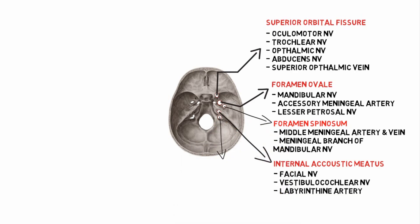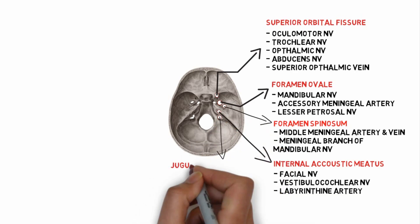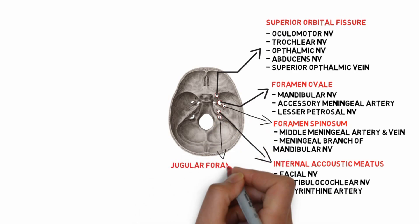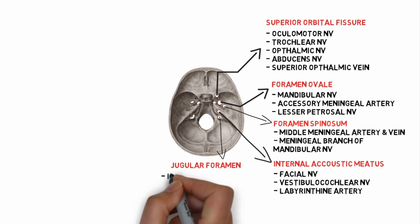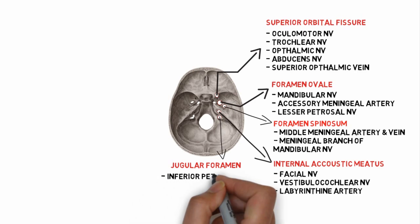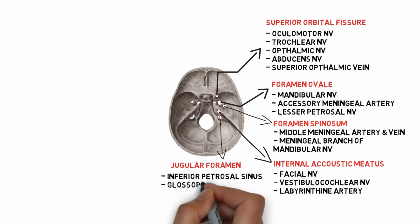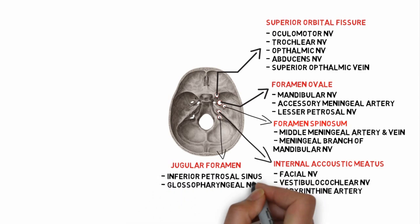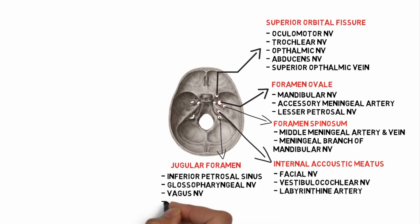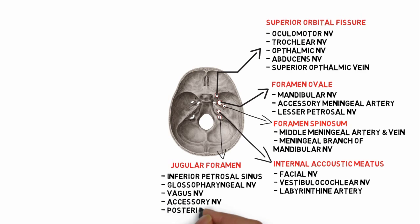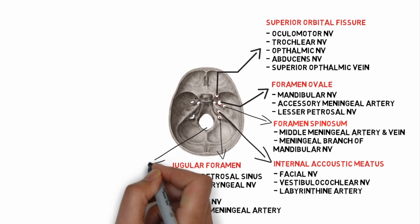The fifth one is the jugular foramen. Structures passing through it include the inferior petrosal sinus, glossopharyngeal nerve, vagus nerve, accessory nerve, and the posterior meningeal artery.